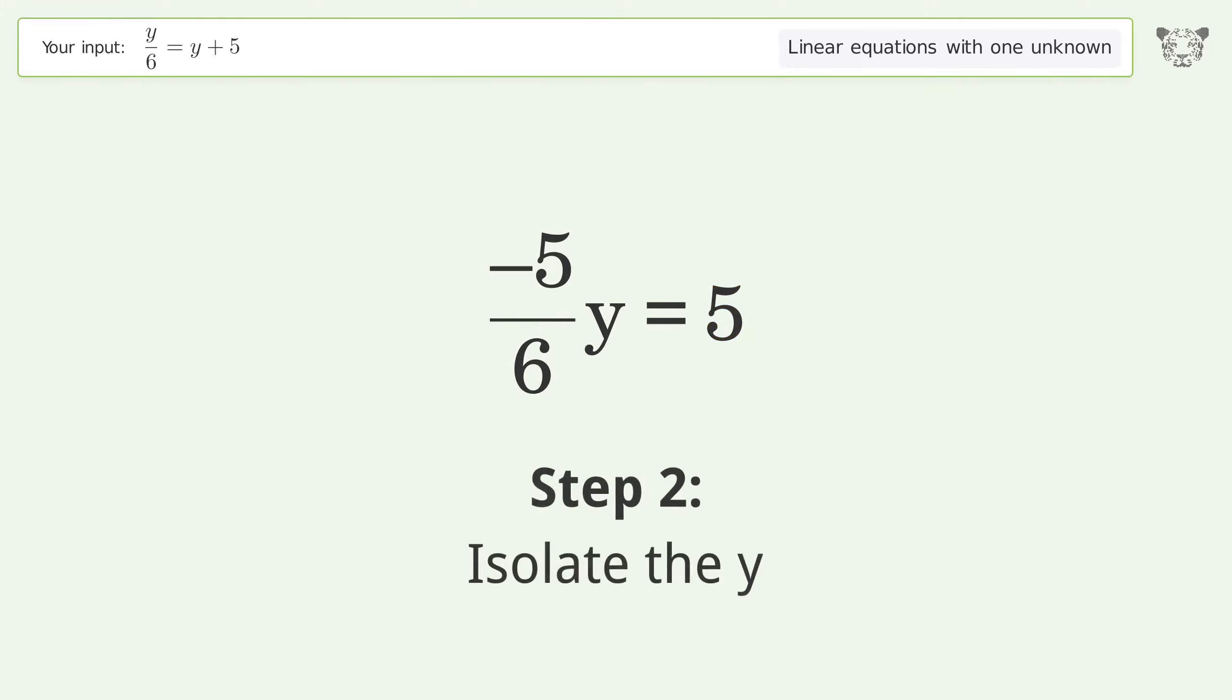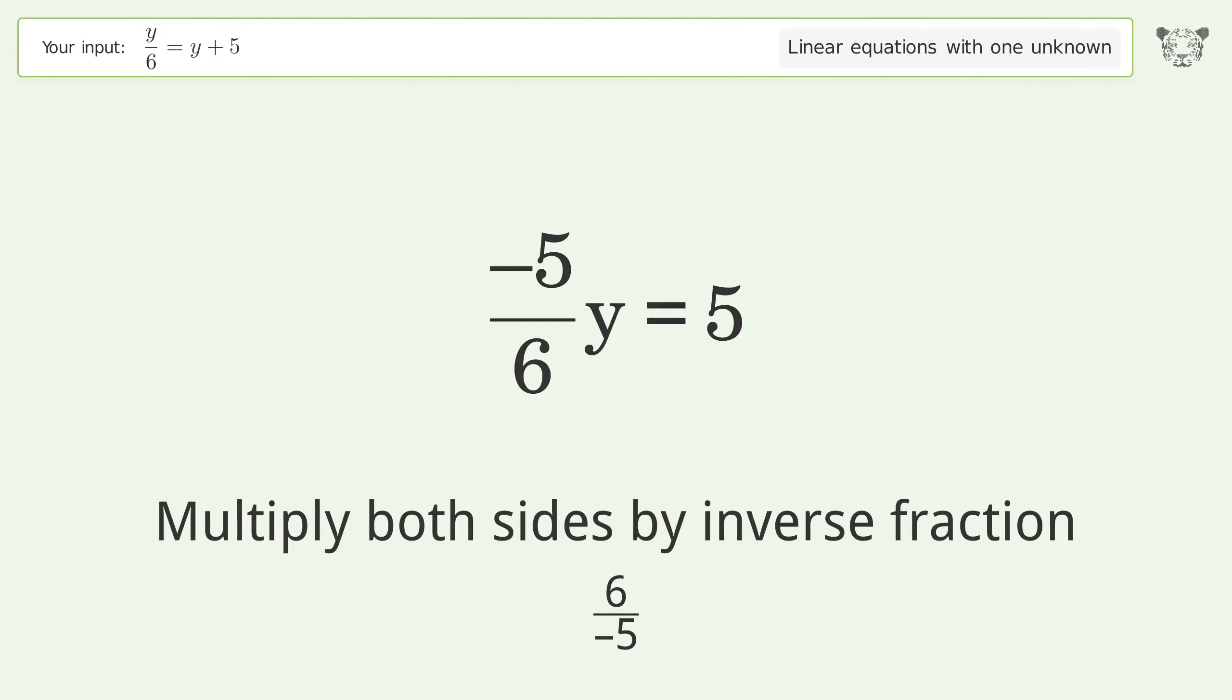Isolate the y. Multiply both sides by inverse fraction 6 over negative 5.